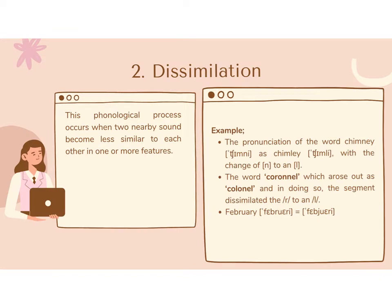Number two: dissimilation. This phonological process occurs when two neighboring sounds become less similar to each other in one or more features. For example, the pronunciation of the word chimney changes an N to an L. The word kernel arose out of colonel, dissimilating the R to an L. The word February becomes February.